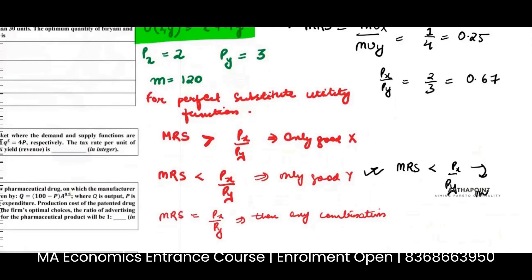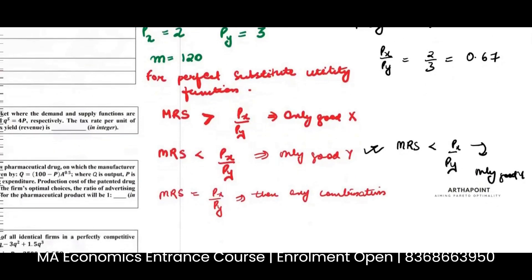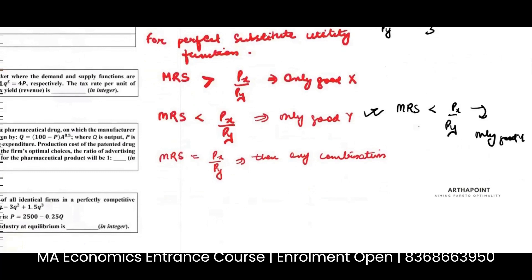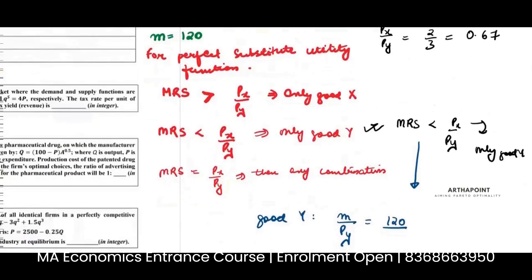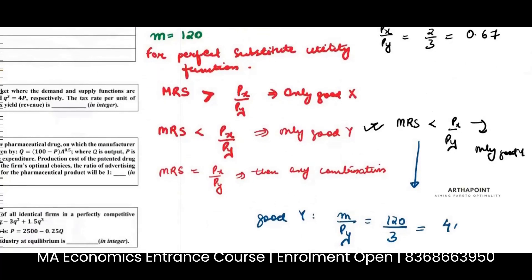Which means I should be consuming only good Y. Now, if I spend my entire income on consuming only good Y, ideally these are substitute goods, I should be consuming only one depending on this ratio. So if I spend my entire income on only good Y, how many units of good Y can I consume? Good Y can be consumed in M by PY units. This is what we have done for substitute goods. Income is 120, price of good Y is given by 3. So I should be consuming 40 units of good Y.